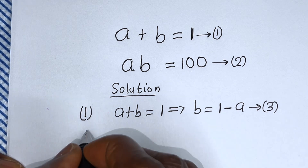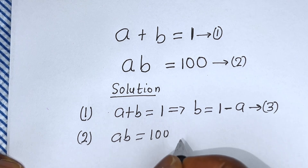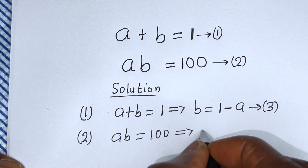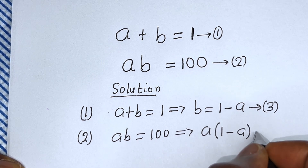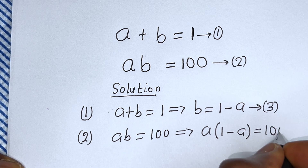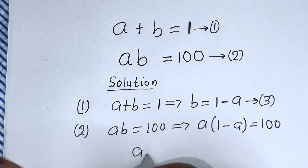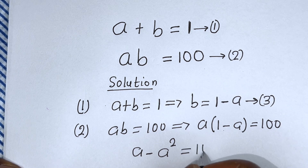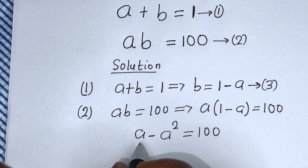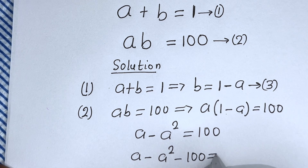Also, from equation two, ab is equal to 100. Substituting equation three, a times (one minus a) is equal to 100. Let us open this bracket: a multiplied by one is a, minus a multiplied by a is a squared, and this is equal to 100. Then we have a minus a squared. Bringing 100 to this side: a minus a squared minus 100 is equal to zero.